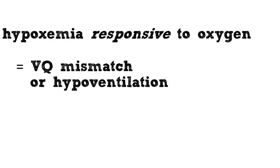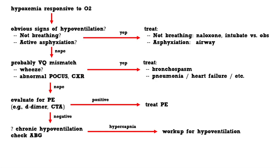Getting back to bread and butter: what about a hypoxemic patient who is responsive to oxygen? If you're called to evaluate a patient on two to five liters of oxygen whose saturation responds to the oxygen, you can know a priori that these patients probably have either VQ mismatch or hypoventilation. First, look at the patient — if they're clearly not breathing, they're probably hypoventilating; if they're asphyxiating, perhaps they have upper airway obstruction. These things are usually relatively clear to detect, and honestly they're not going to really manifest with hypoxemia.